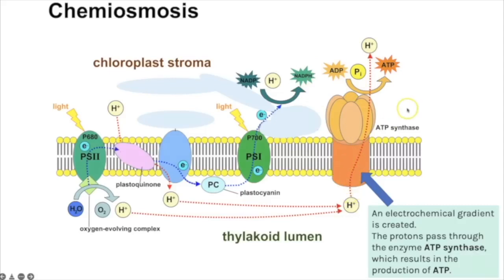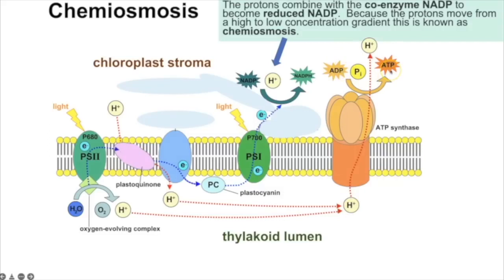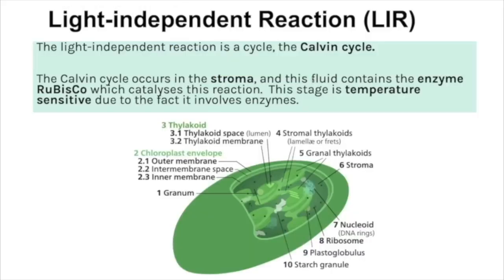That electrochemical gradient enables the protons to move by facilitated diffusion back down their concentration gradient to the stroma, but the only protein they can pass through is ATP synthase. As the protons move through ATP synthase, the enzyme phosphorylates ADP into ATP. The protons are then back on the stroma side, and the NADP coenzyme picks up the electrons from the end of the electron transport chain and the protons after passing through ATP synthase, reducing NADP to NADPH.